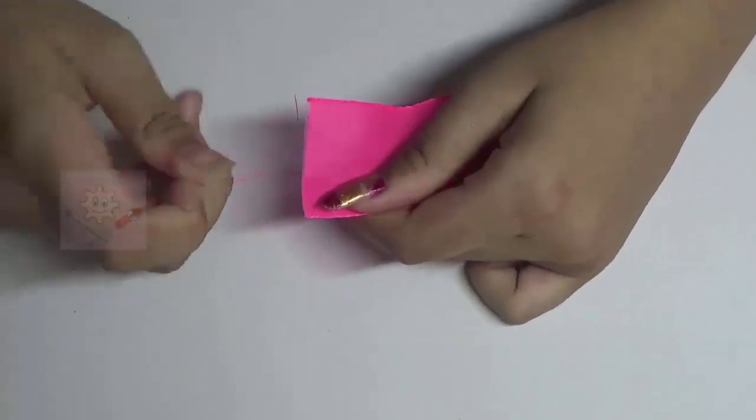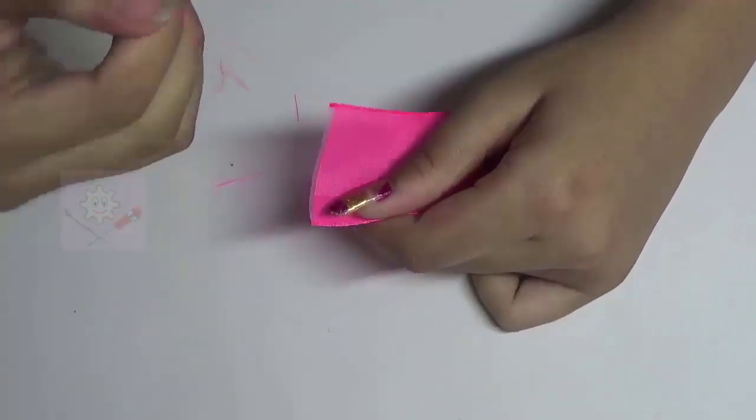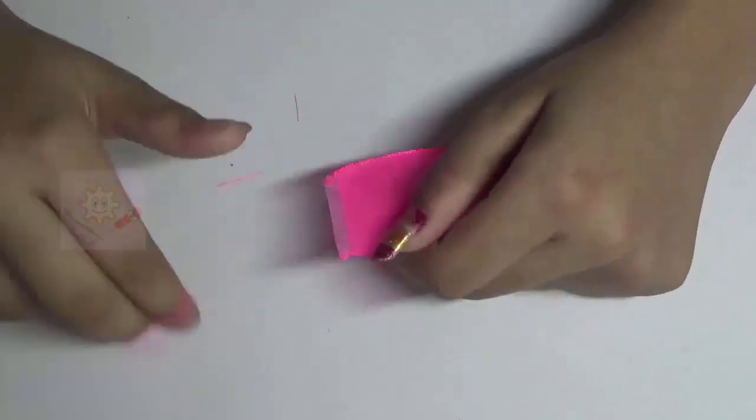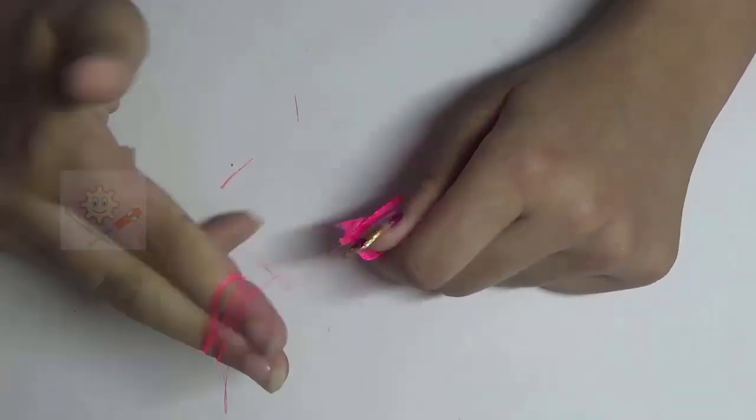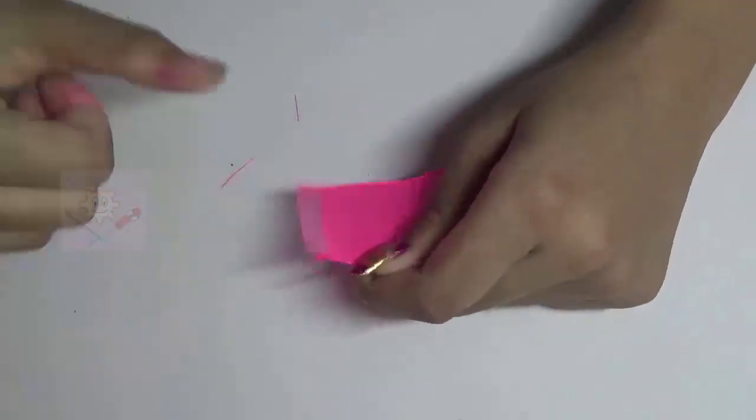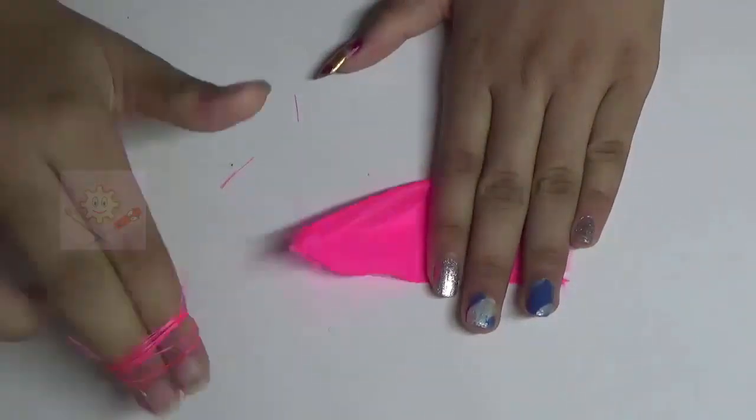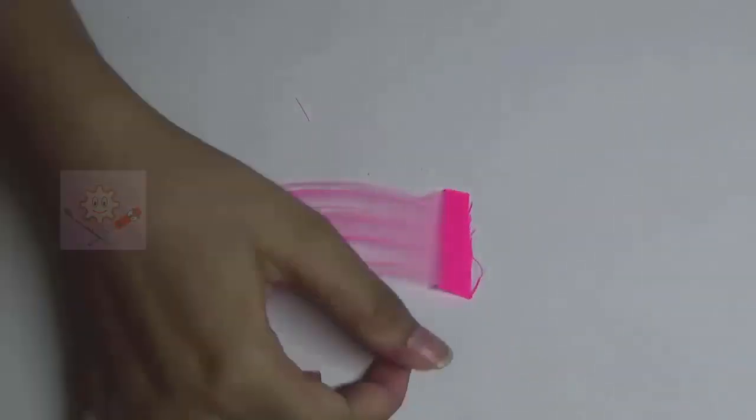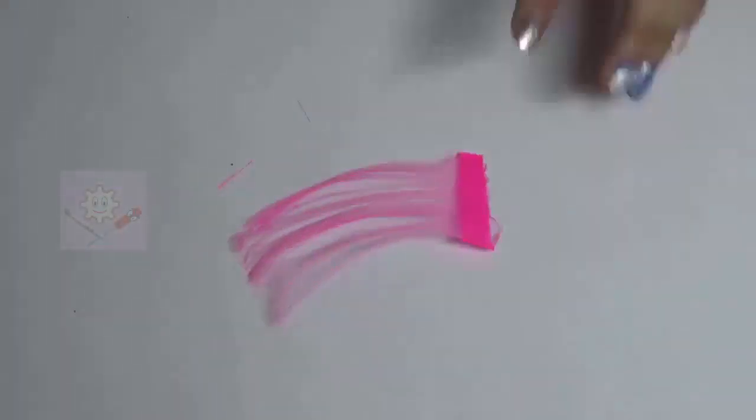Now start pulling off the thin threads in between it and continue doing this till the end of it, by leaving a little bit of space on the top. It will look like this. You can trim off the ends if you want.